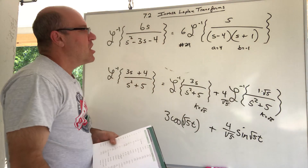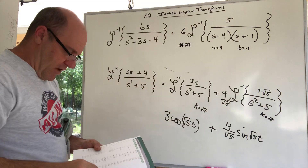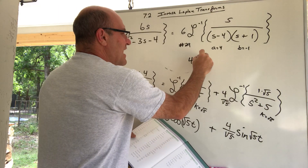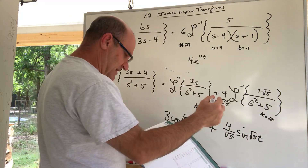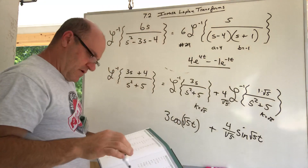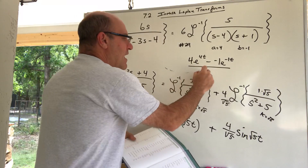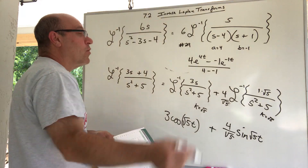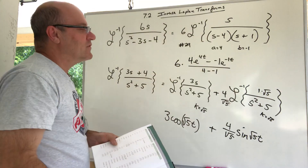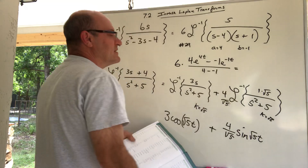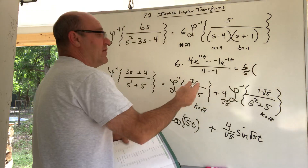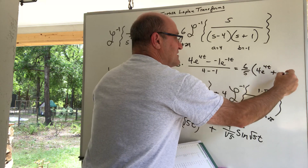Rule number 29 gives: [a·e^(at) − b·e^(bt)] / (a − b). With a = 4, b = −1, and a − b = 5, and the factor of 6 out front, the result is (6/5)[4e^(4t) − (−1)e^(−t)], which simplifies to (6/5)(4e^(4t) + e^(−t)).